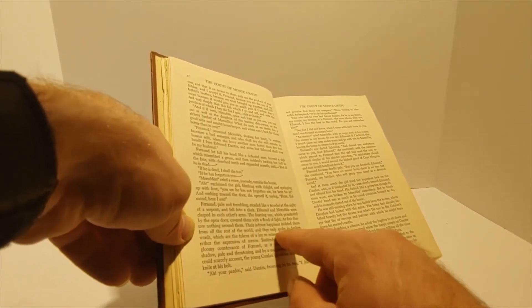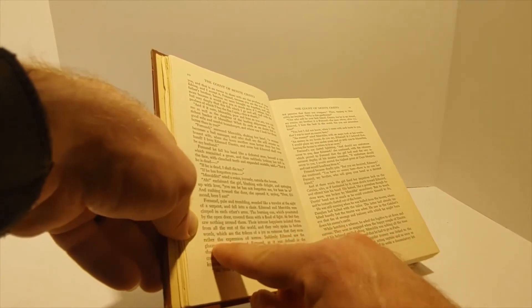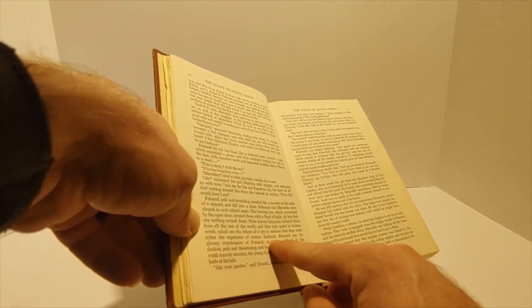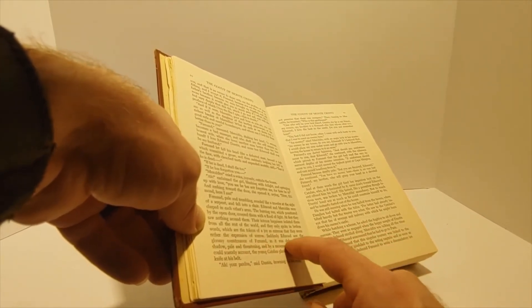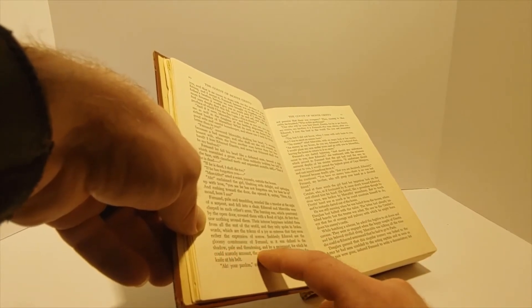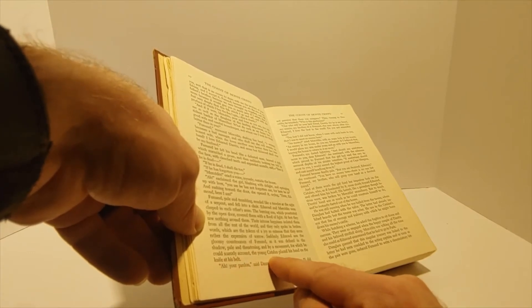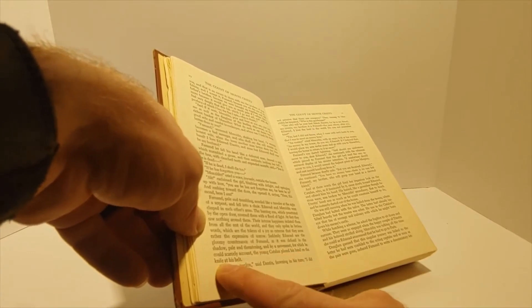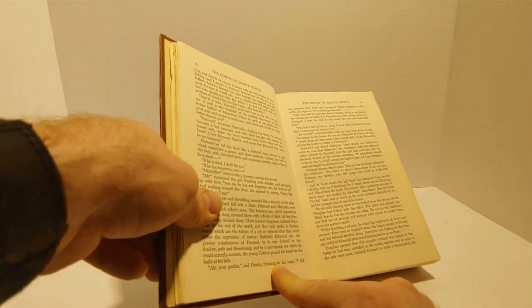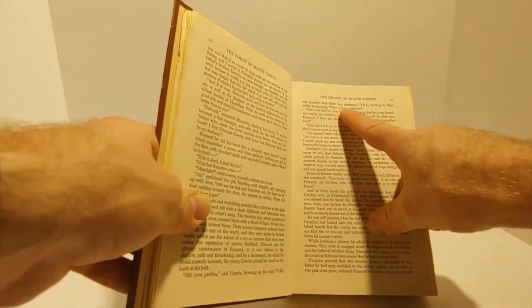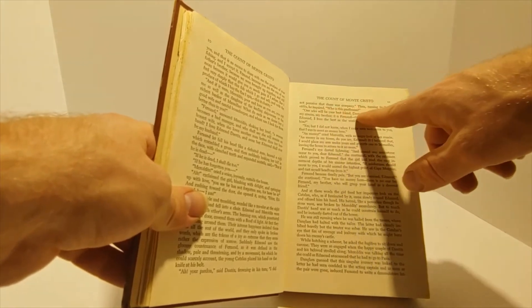And they only spoke in broken words, which are the tokens of a joy so extreme that they seem rather the expressions of sorrow. Suddenly, Edmond saw the gloomy countenance of Fernand, as it was defined in the shadow, pale and threatening, and by a movement for which he could scarcely account, the young Catalan placed his hand on the knife at his belt. Ah, your pardon, said Dantes, frowning in his turn. I did not perceive that there was company. Then turning to Mercedes, he inquired, Who is this gentleman?